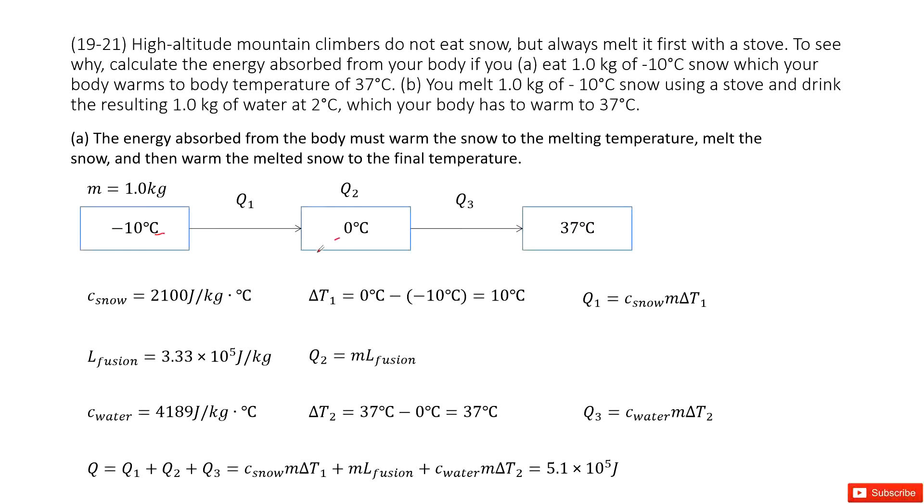Now at the second step, at 0 degrees, the snow will convert to liquid water. This is the melt. For melt, we have a fusion heat Q2. We just use the mass of the snow times the constant fusion, then we can get it.